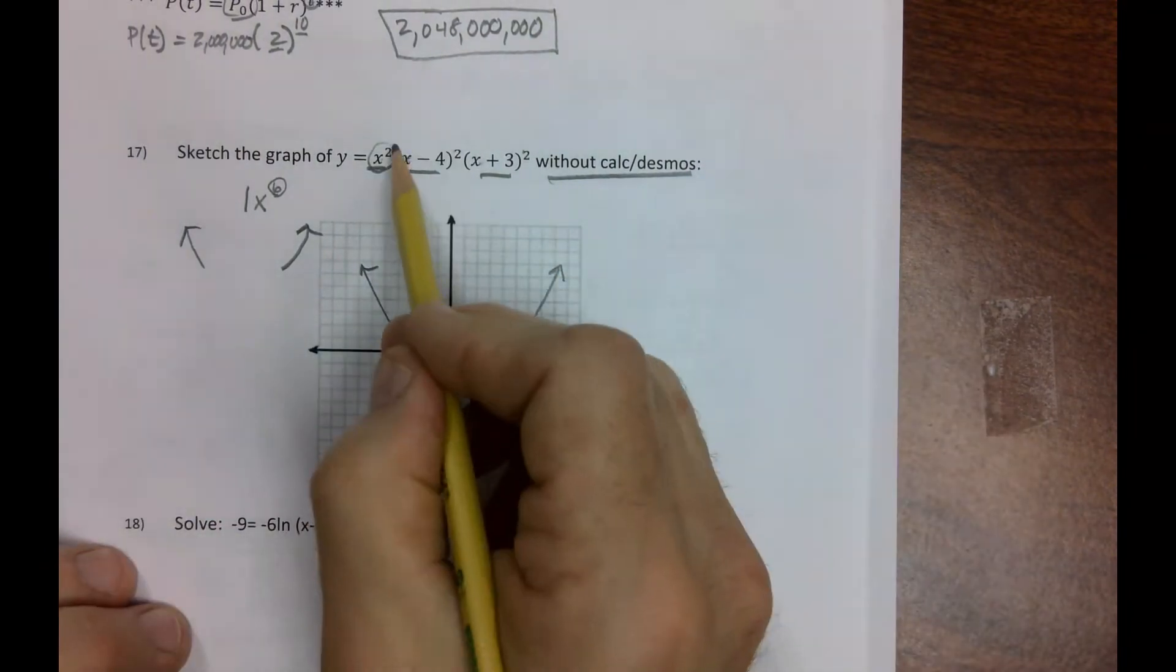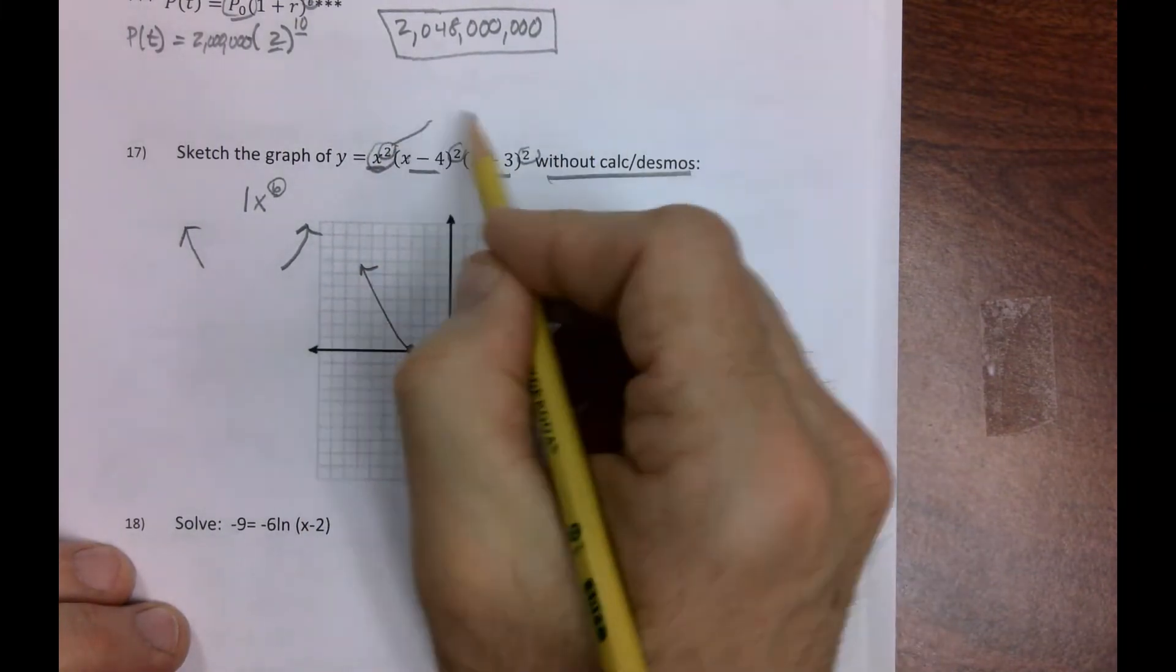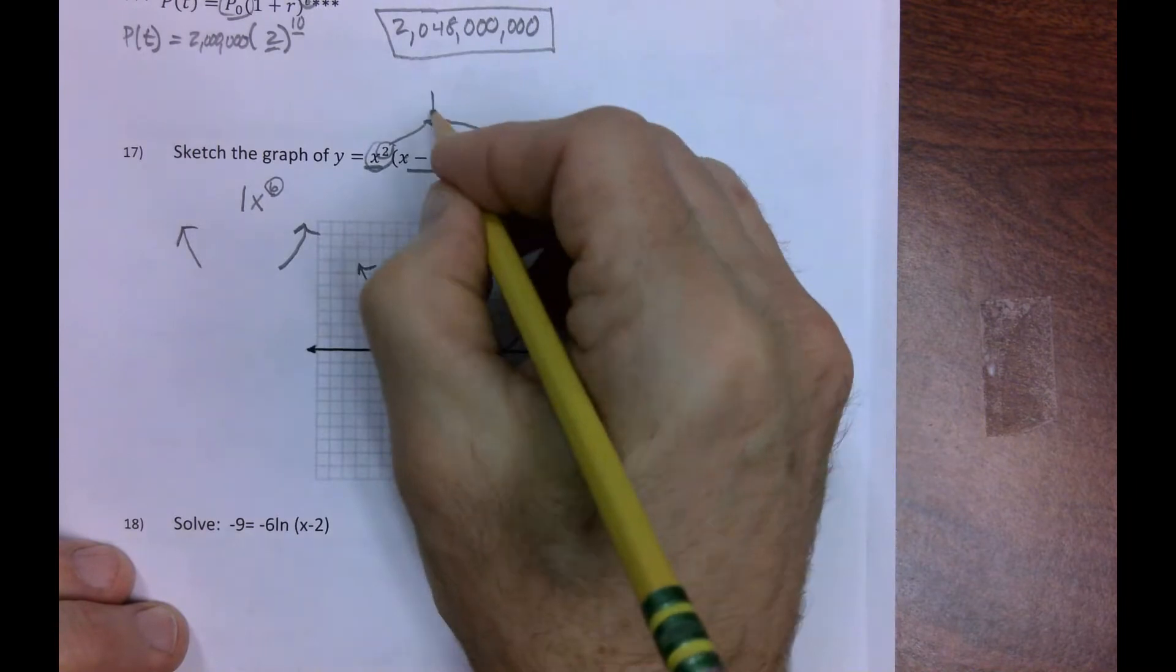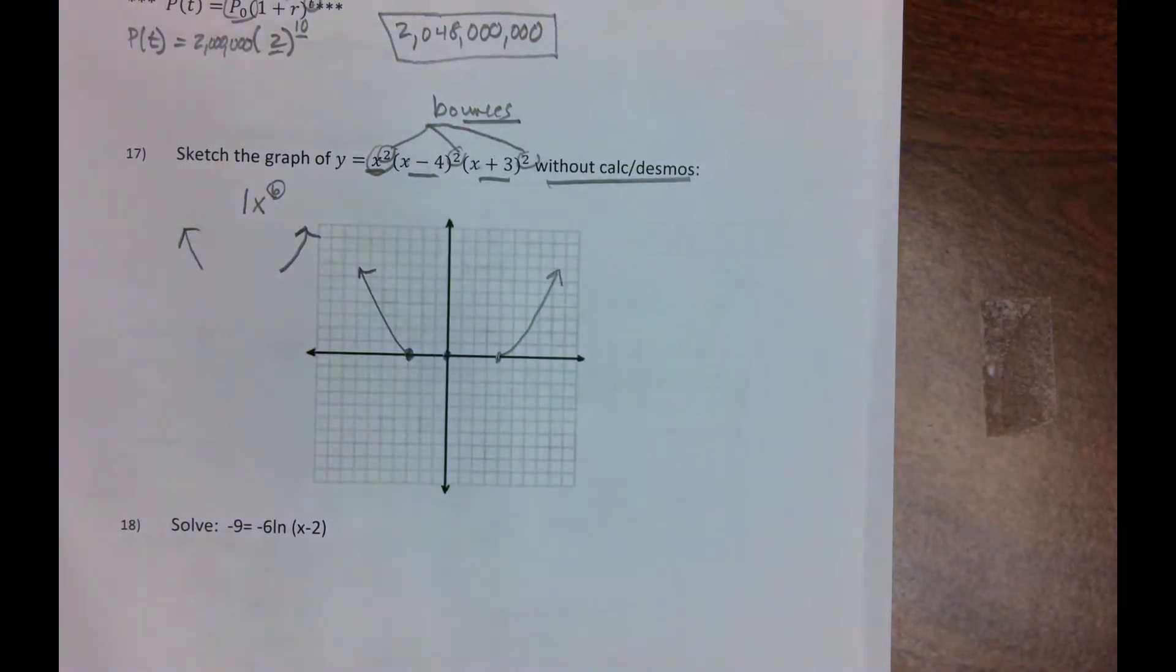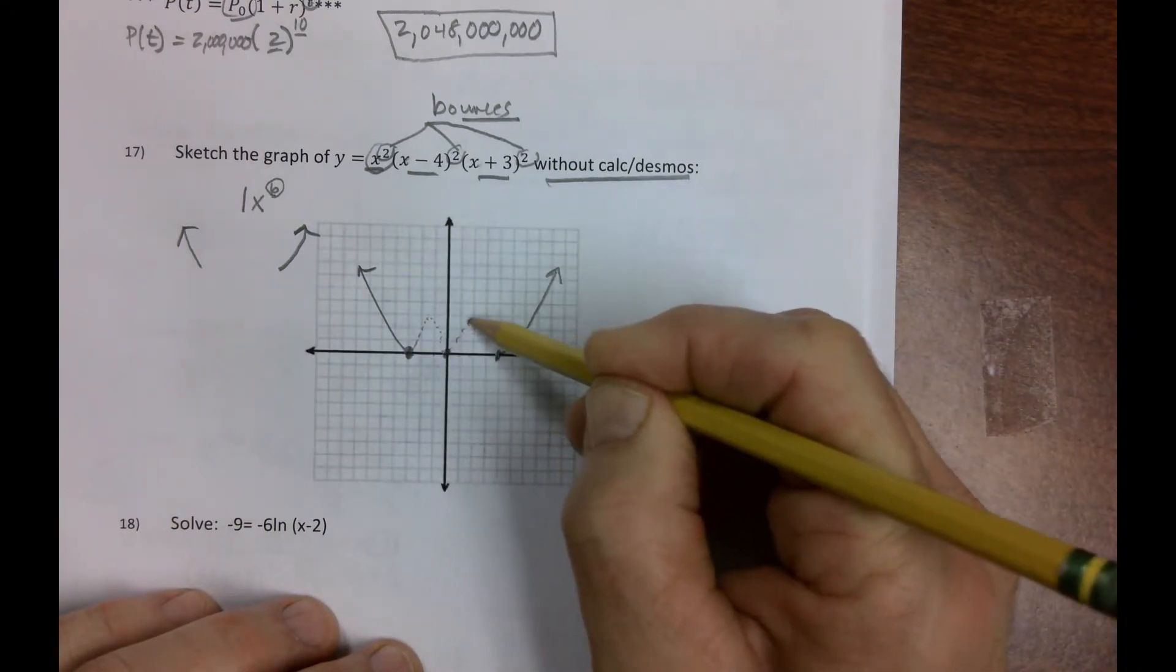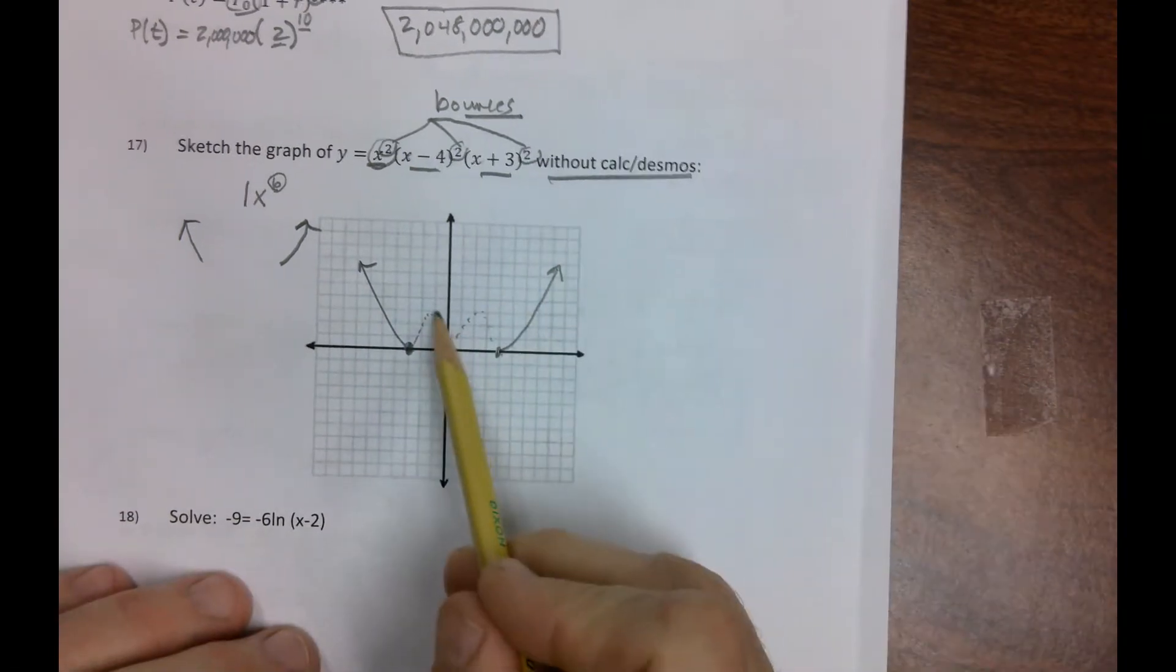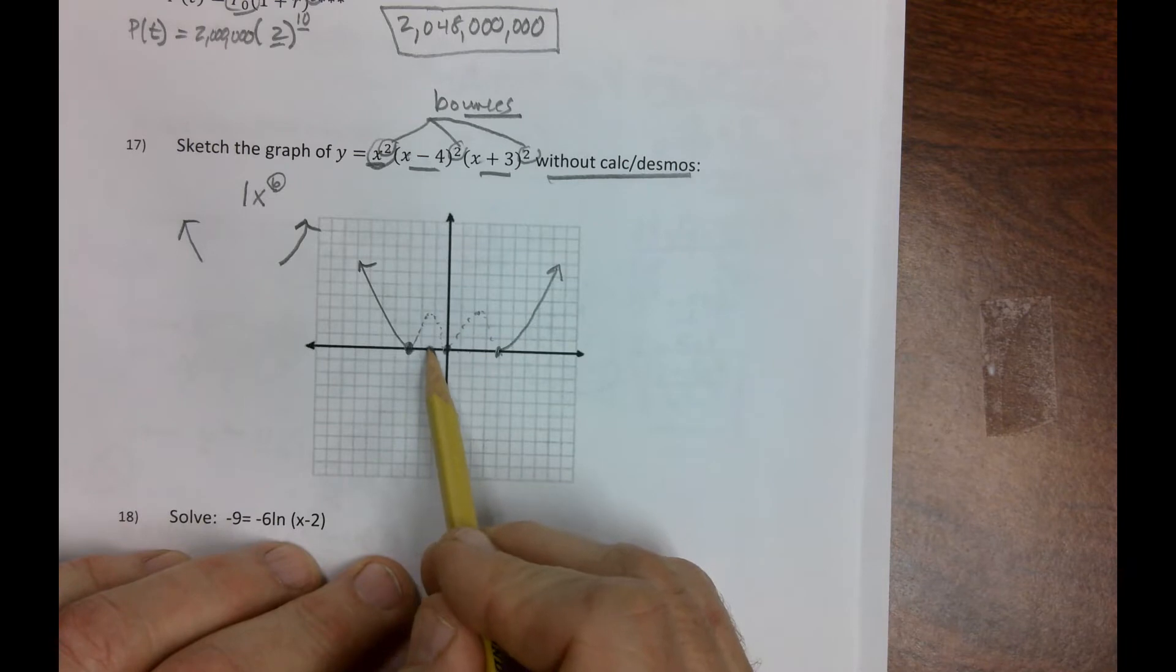So now I also know this is a 2, that's a 2, that's a 2, which tells me that's even multiplicity, which means it bounces off those 0s. So I know this is going to go up somewhere, and down, and then up, and then down. So how do we figure out where these peaks are, or these local maximum values?